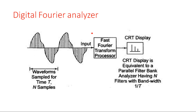The input waveform — a sampled waveform — is given to the first Fourier transform processor. This processor takes a sampled version of the input signal. The input signal is sampled, meaning samples of the input signal are given to this first Fourier transform, which processes the signal and converts the time domain signal into a frequency domain signal.